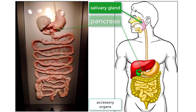Next is the pancreas, which is an extremely important organ. Located just below the stomach, the pancreas produces many different enzymes that are released into the small intestine. These enzymes are critical in breaking down molecules and balancing your body. More on these enzymes later.